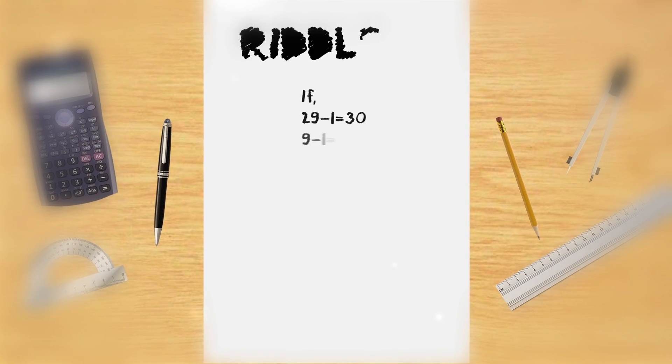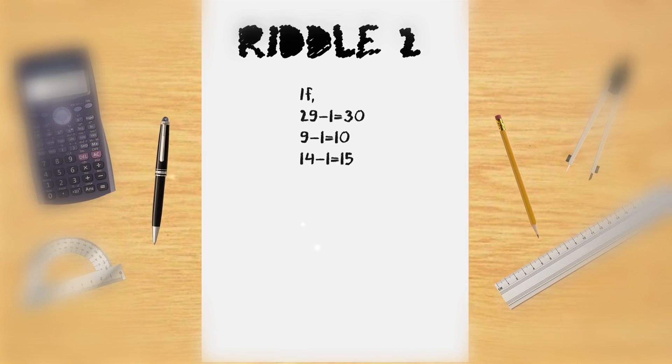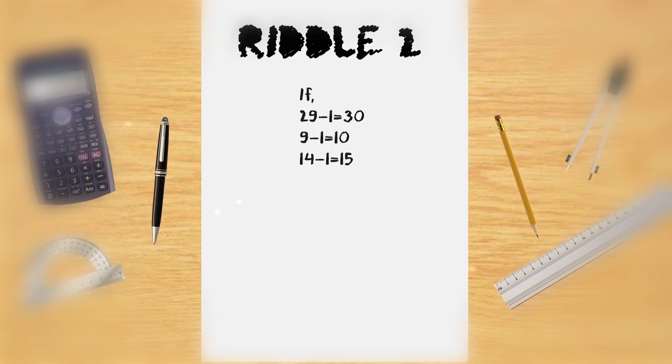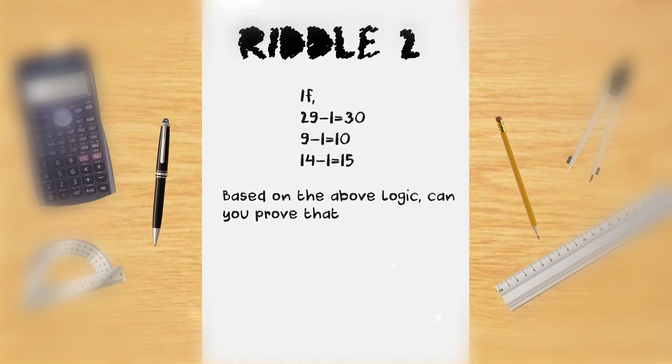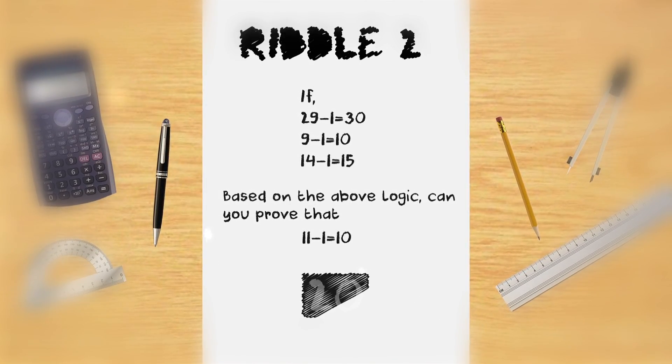If 29-1 equals 30 and 9-1 equals 10 and 14-1 equals 15, based on the above logic, can you prove that 11-1 equals 10?